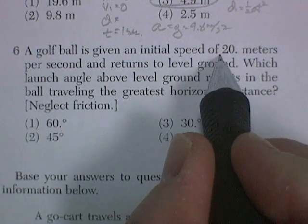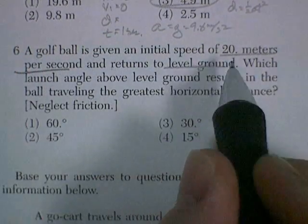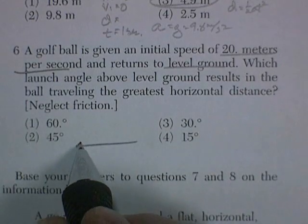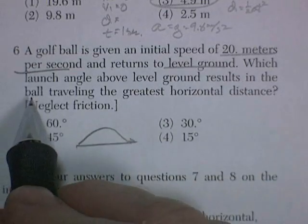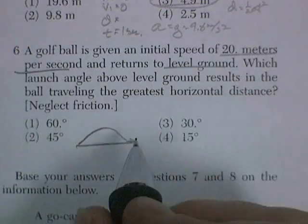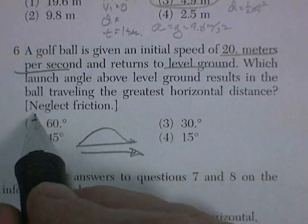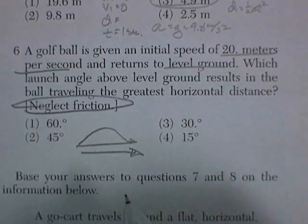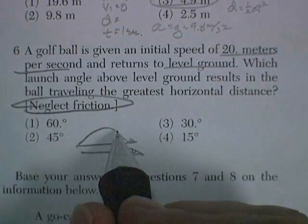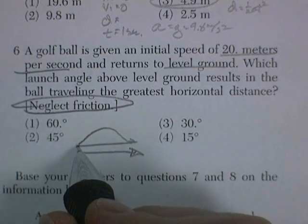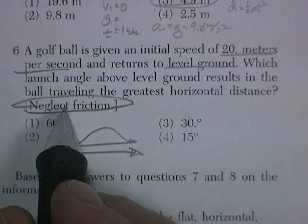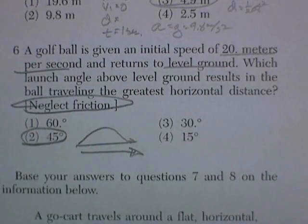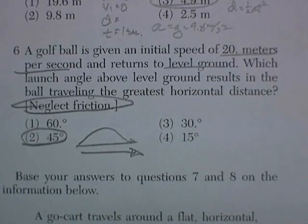A golf ball is given an initial speed of 20 meters per second and returns to level ground. So you hit a golf ball and it lands on the ground. Which launch angle above level ground results in the ball traveling the greatest horizontal distance? We want it to go the greatest that way. Neglect friction. And that's a tricky one because for golf balls they're aerodynamic and they actually fly better at somewhat lower angles. However, if you neglect friction the greatest range comes at 45 degrees of launch angle. Tricky question. Especially if you're a golfer.